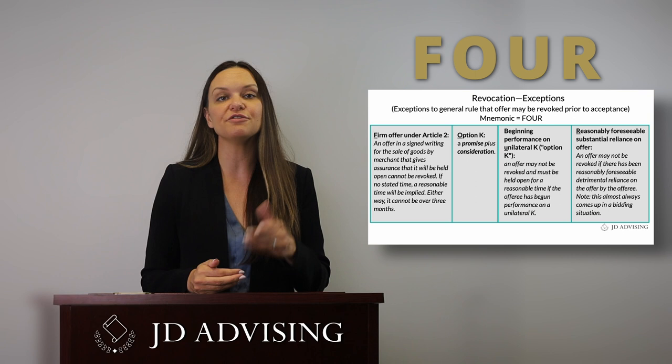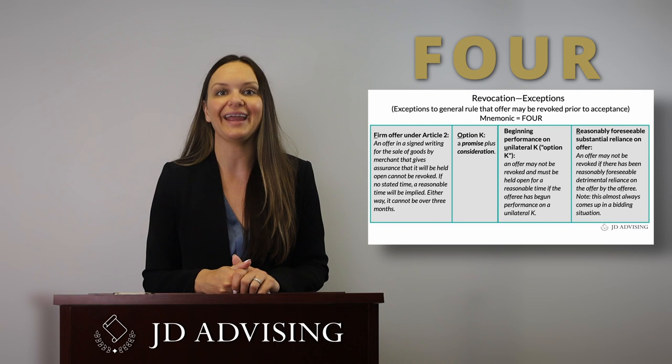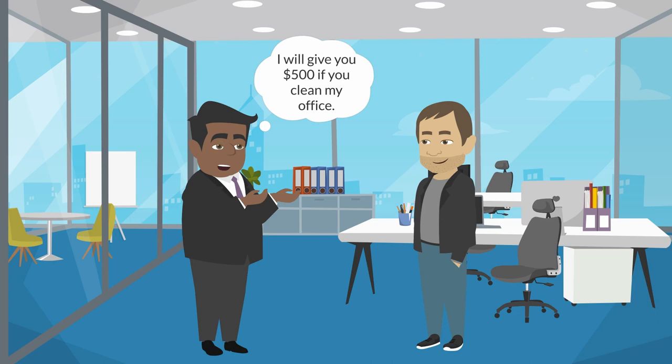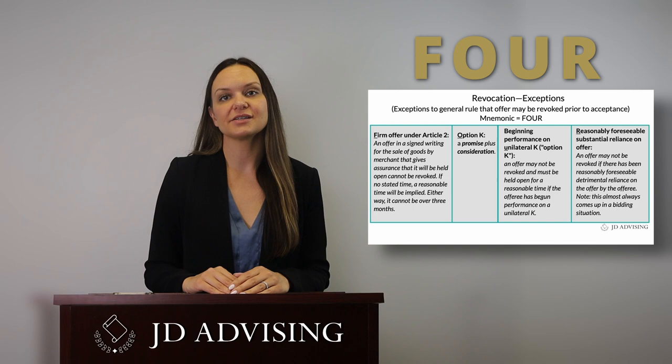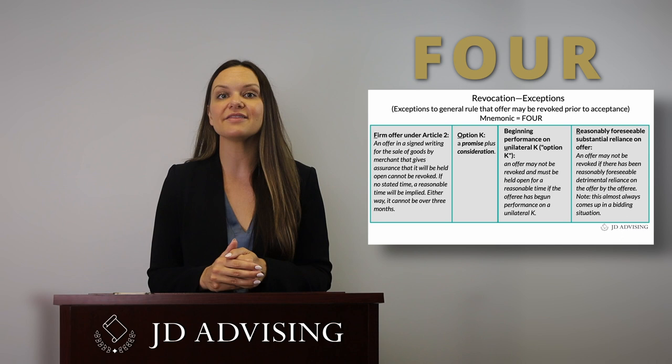This is a good time to remind you to read the language in quotes carefully. In this problem, the quoted language says 'I will give you $500 if you clean my office' — this is an offer to enter into a bilateral contract. That means one can accept by promising to perform or beginning performance. Thus, when B starts to clean the office, that's beginning performance and therefore acceptance, which means it's too late to revoke.